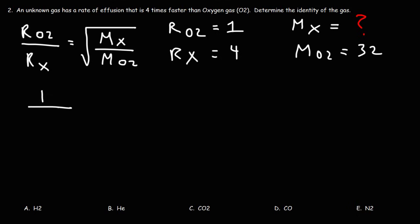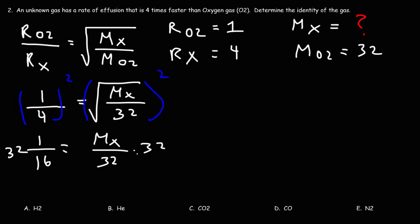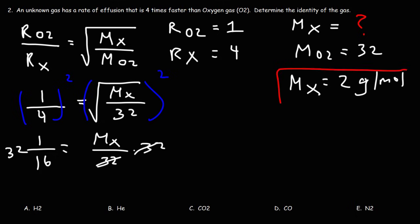Plugging in the numbers: the rate for O2 is 1, the rate for the unknown gas is 4, and the molar mass of O2 is 32. To eliminate the square root, we square both sides. 1 squared is 1 and 4 squared is 16, so we get 1 over 16 equals the molar mass of X over 32. Multiplying both sides by 32 gives 32 divided by 16, which is 2. So the molar mass of the unknown gas is 2.